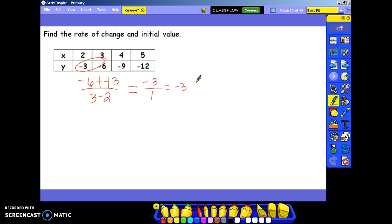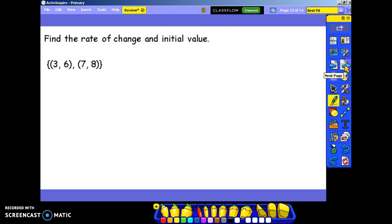Initial value is your starting point or your y-intercept. It's what is y when x is 0. So I need to take my slope and an ordered pair and plug it in for y equals m times x plus b. Negative 3 times 2 is negative 6. And to get b by itself, I add 6 to both sides, and that gives me positive 3. 3 is my initial value or my y-intercept. Negative 3 is my slope or my rate of change.